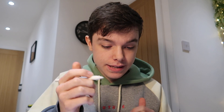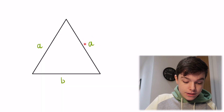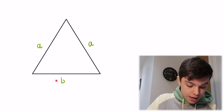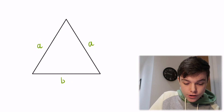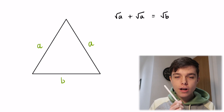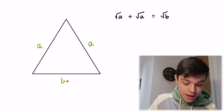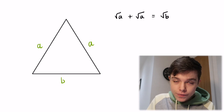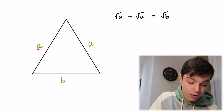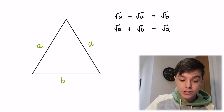Homer's theorem says that if we square root any two sides of the isosceles triangle and add them together, we get the square root of the other side. So: the square root of A plus the square root of A gives the square root of B. But since Homer says any two sides, we also get: the square root of B plus the square root of A gives the square root of A. From that isosceles triangle we have two equations.